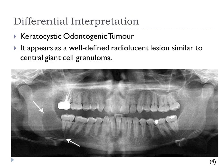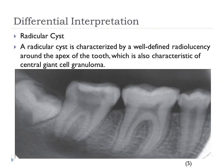One differential interpretation is keratocystic odontogenic tumor. It appears as a well-defined radiolucent lesion similar to Central Giant Cell Granuloma, as seen in this pantomograph on the right mandible. A second differential interpretation is radicular cyst, characterized by a well-defined radiolucency around the apex of the tooth, which is also characteristic of Central Giant Cell Granuloma. In this periapical radiograph, you can see on tooth number 31 the well-defined radiolucency at the apex.